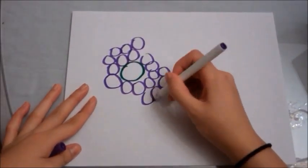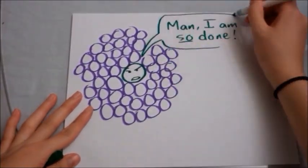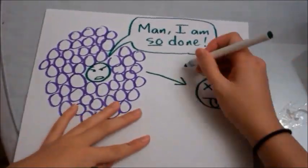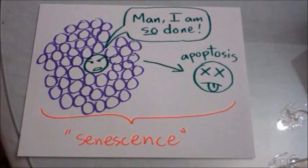Normal cells don't divide infinitely, though. Normal body cells stop dividing after a certain number of generations, usually around 50 or 60 times, where the cells will then commit apoptosis, cell suicide. This whole process is called senescence.